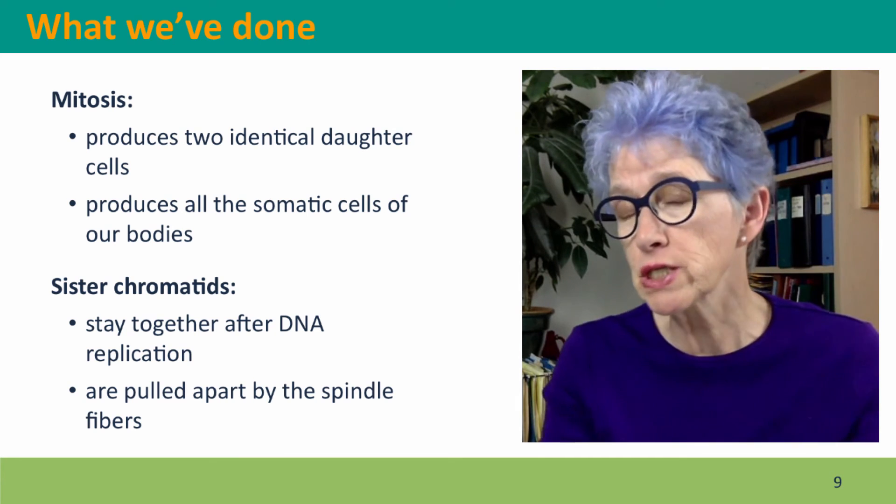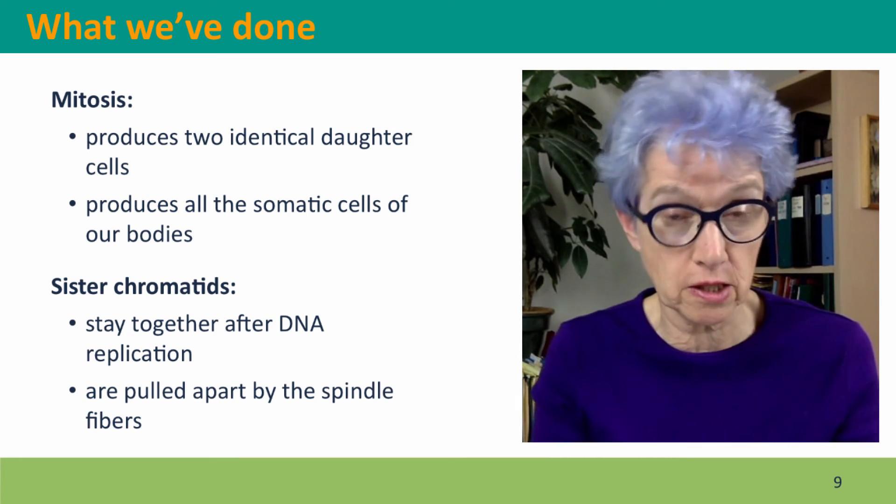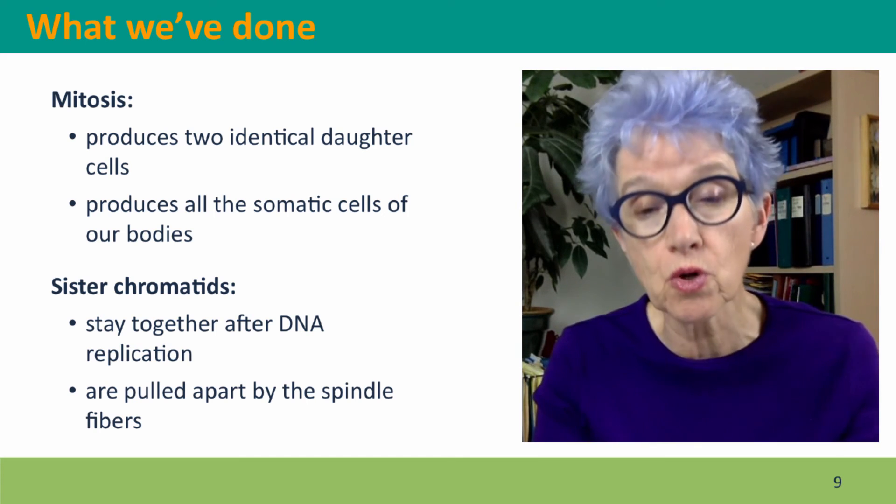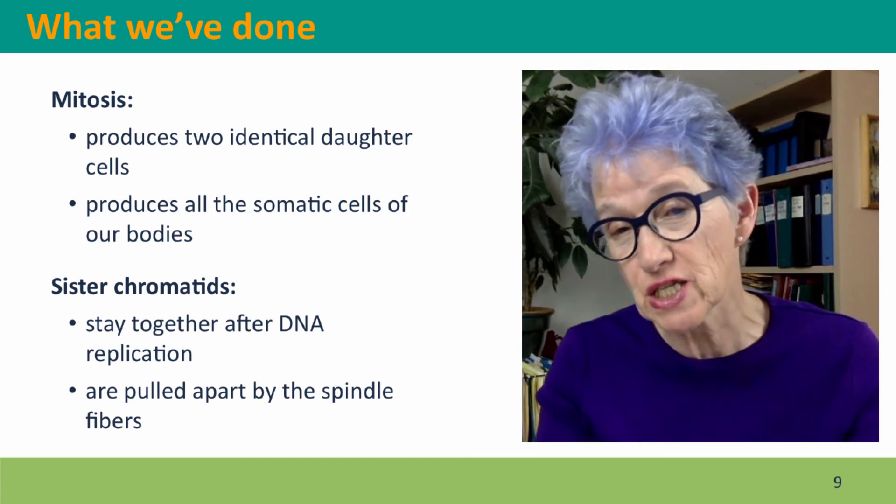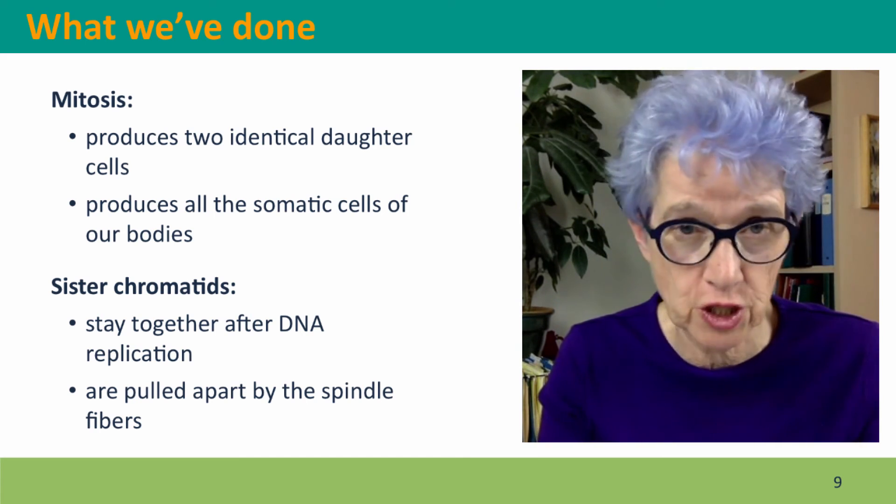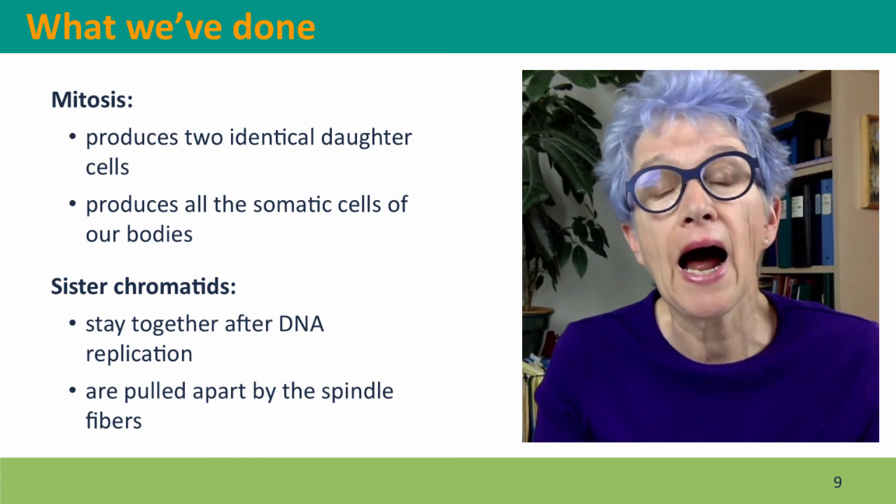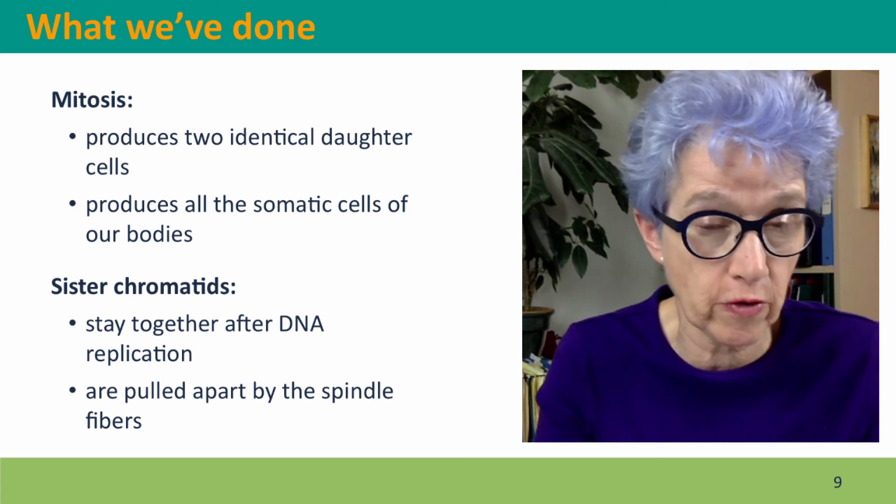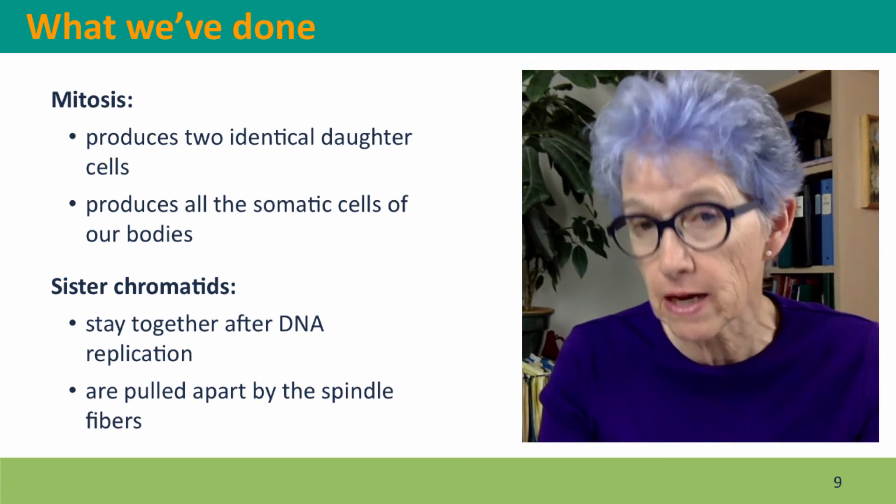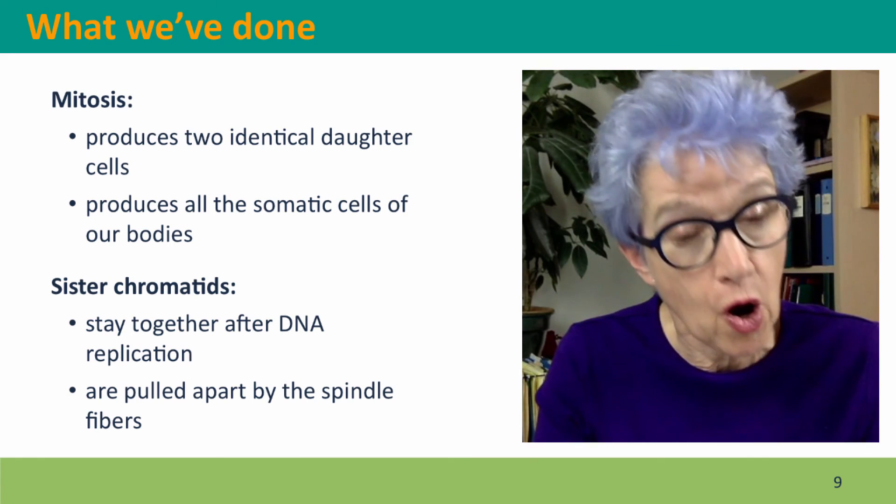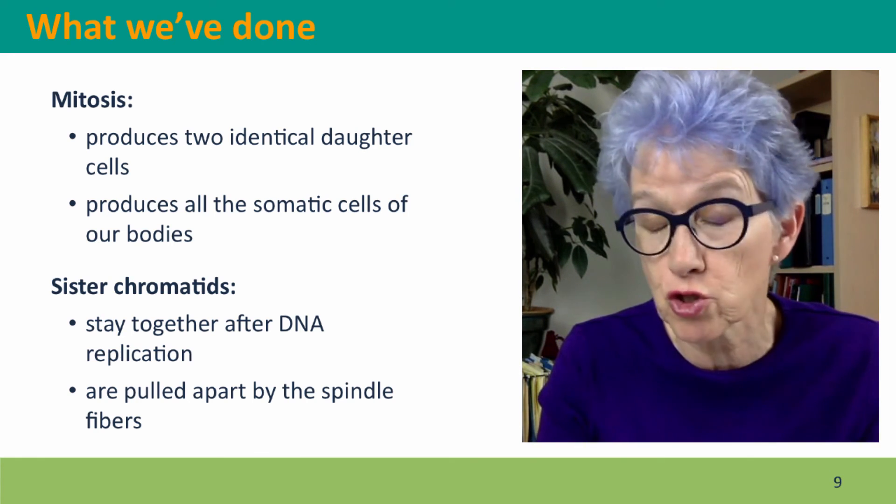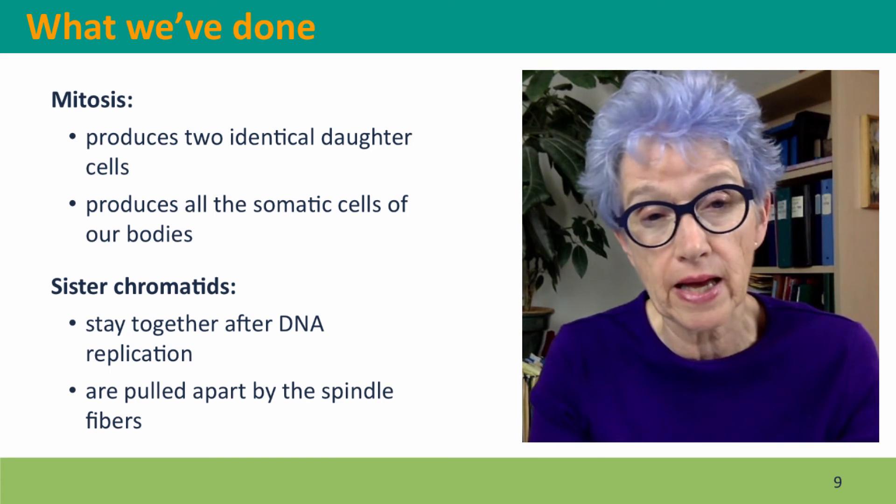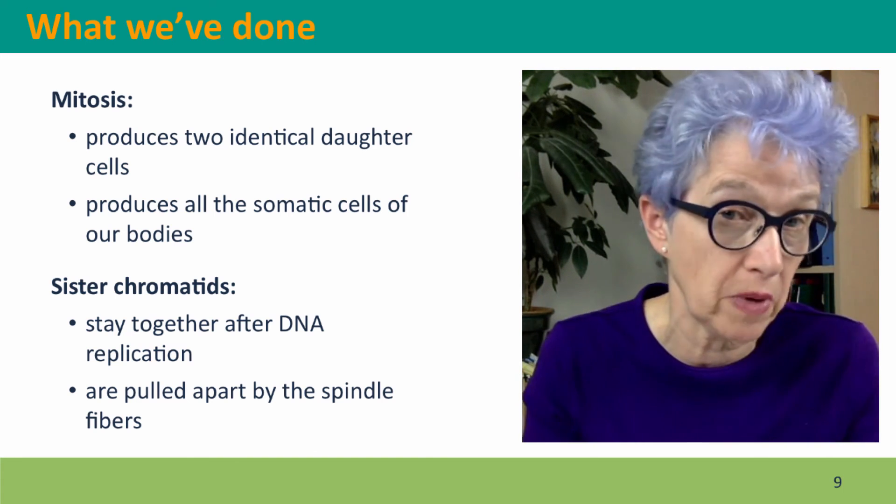So mitosis has really only one task to do but it does it very well. Its job is to produce two daughter cells with the same genetic information as the parent cell. In doing this, it produces all of the somatic cells of our bodies. Everything except our eggs or our sperm are made by mitosis starting from the diploid cell that arises when the egg that became us was fertilized by the sperm.